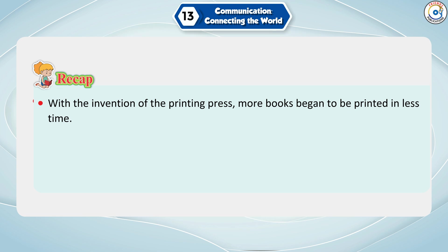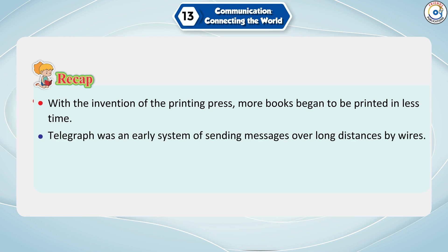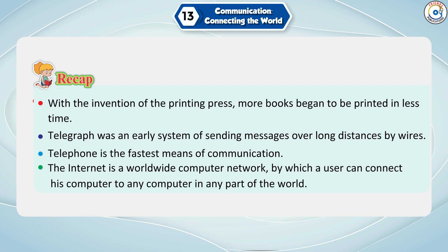Recap: With the invention of the printing press, more books began to be printed in less time. The telegraph was an early system of sending messages over long distances by wires. The telephone is the fastest means of communication. The Internet is a worldwide computer network by which a user can connect his computer to any computer in any part of the world.